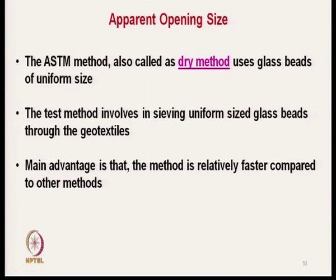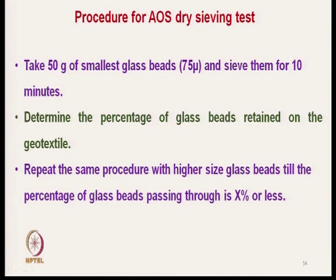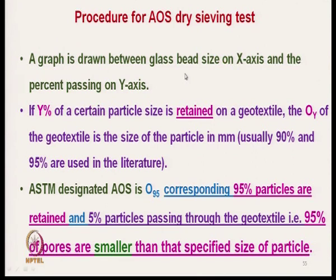In the dry sieving test, 50 grams of the smallest beads available — typically 75 micron — are sieved for 10 minutes. We determine the percent of glass beads retained on the geotextile. The same process is repeated with progressively larger glass bead sizes until the required percent passing (x%) is achieved. A graph is drawn with glass bead size on the x-axis and percent passing on the y-axis.